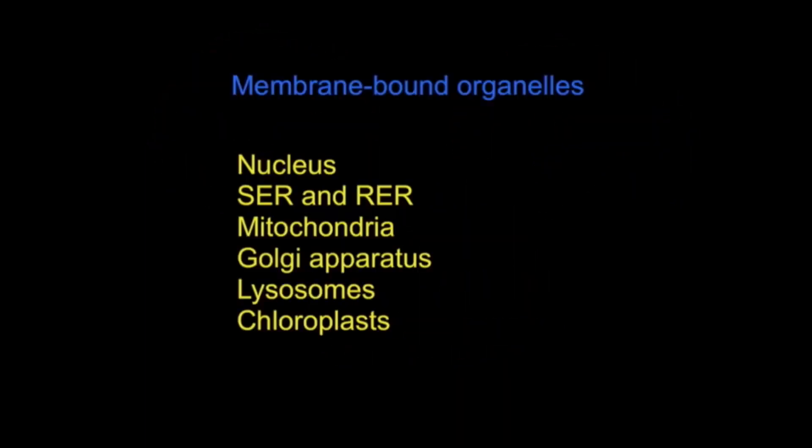In conclusion, eukaryotic cells have a compartmentalized structure because they contain membrane-bound organelles. This list identifies which organelles are membrane-bound.